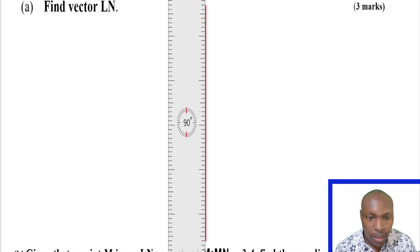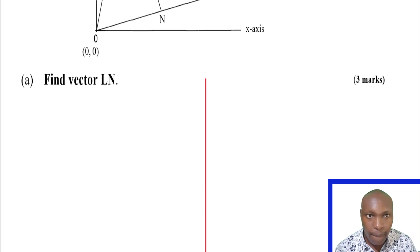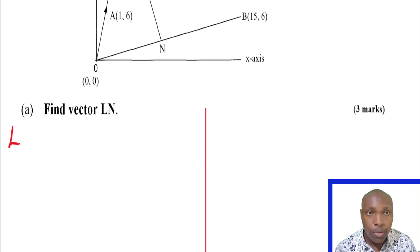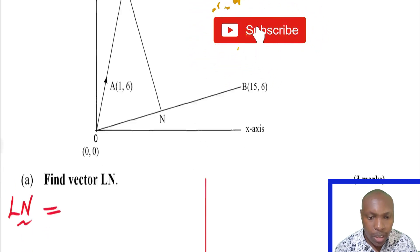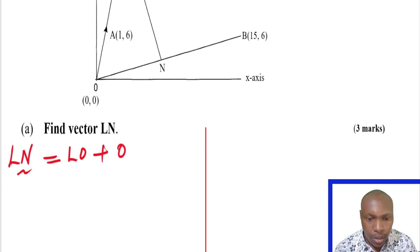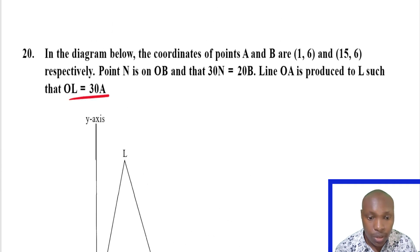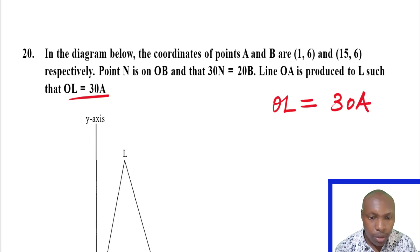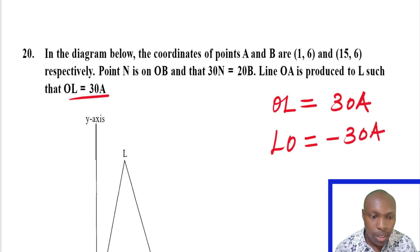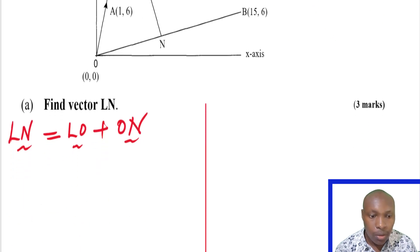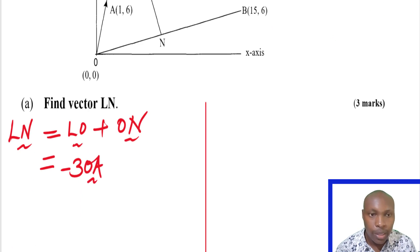The first question: find vector LN. Let's see how we're supposed to find vector LN. LN equals LO plus ON — that is the route we're going to use. Now we need to get LO, and we're given that OL is 3OA. So LO will be negative 3OA since it is moving in the opposite direction.